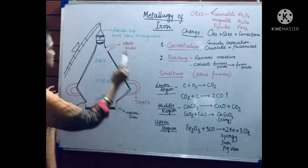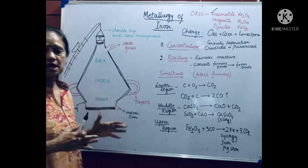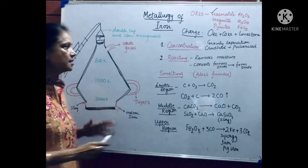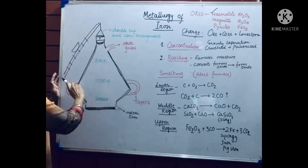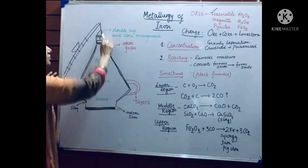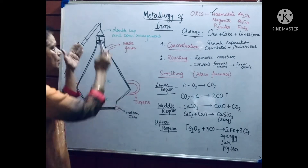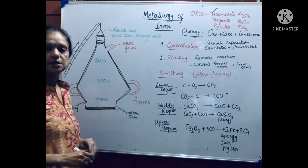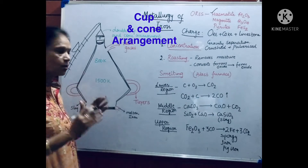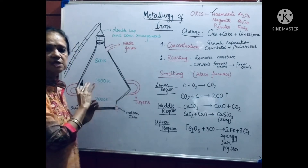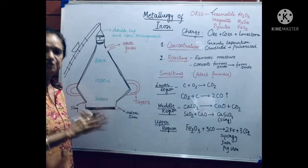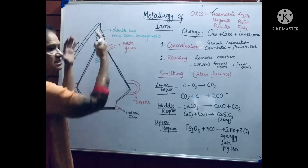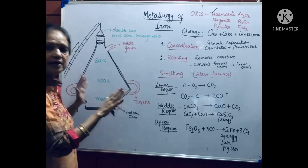Ore, coke, and limestone are loaded via a trolley. The furnace is extremely high — higher than a school building. There is a double cup and cone arrangement because the furnace has fixed temperatures that should not change. We don't want to open the whole furnace, as the gases would escape.